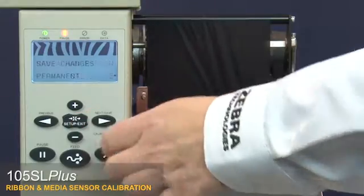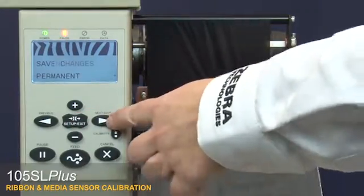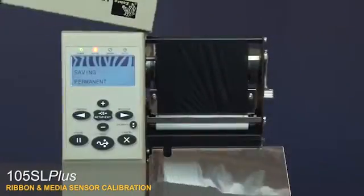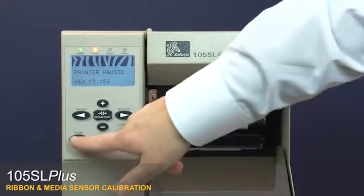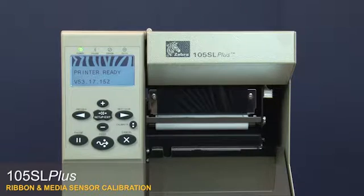Setup exit. Then next save to save your changes. Close the media door. Press pause. Your media and ribbon sensors are now calibrated.